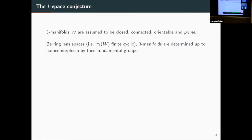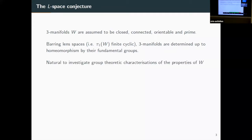Barring lens spaces, three-manifolds are determined up to homeomorphism by their fundamental groups. Poincaré conjectured that the only simply-connected closed three-manifolds are the three-sphere. The simplest three-manifolds beyond the three-sphere are the lens spaces, and you can have distinct lens spaces with the same fundamental group. But those are the only counter-examples — it took over 100 years to prove that, but there we go.